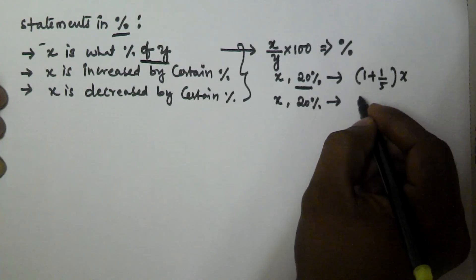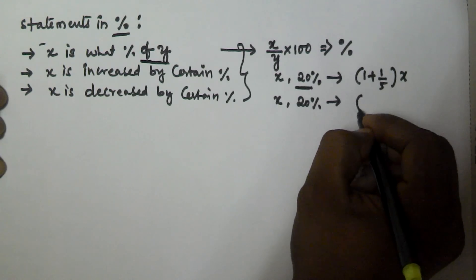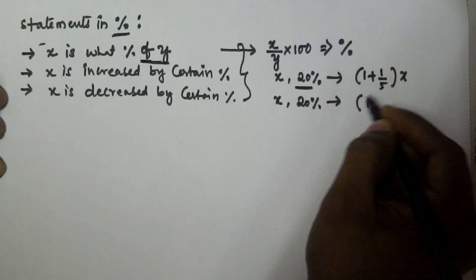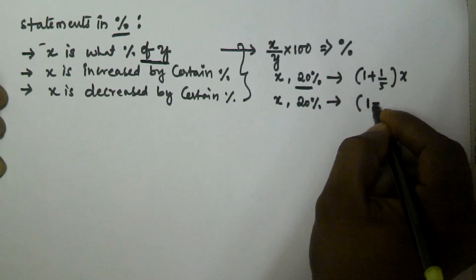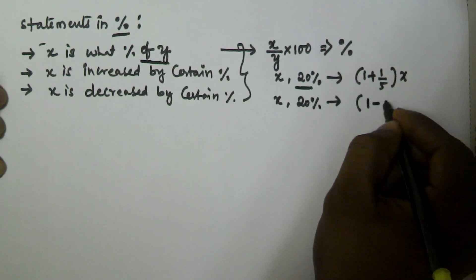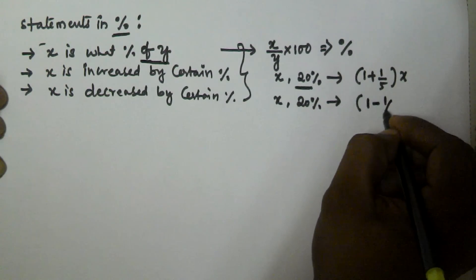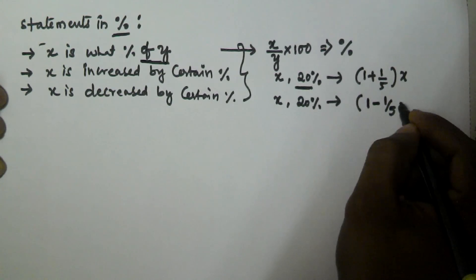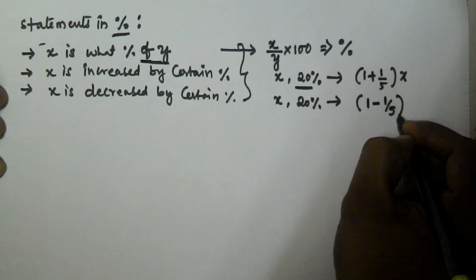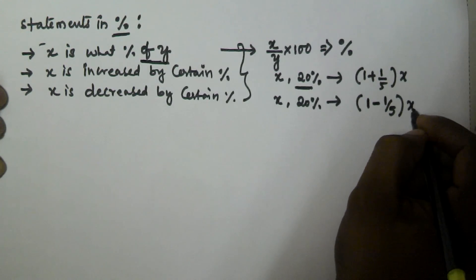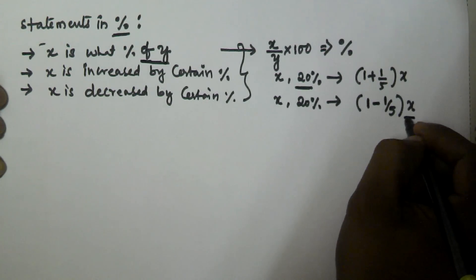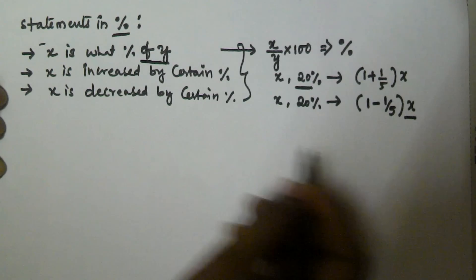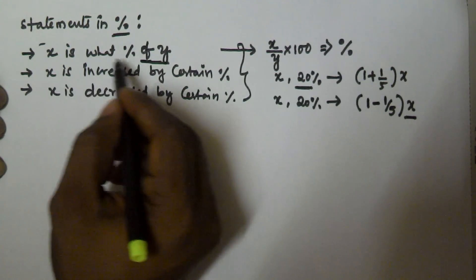For 'x is decreased by 20%', that means (1 − 1/5) × x — since 20% is equivalent to the fraction 1/5 — and this gives the new value of x after decreasing by 20%.